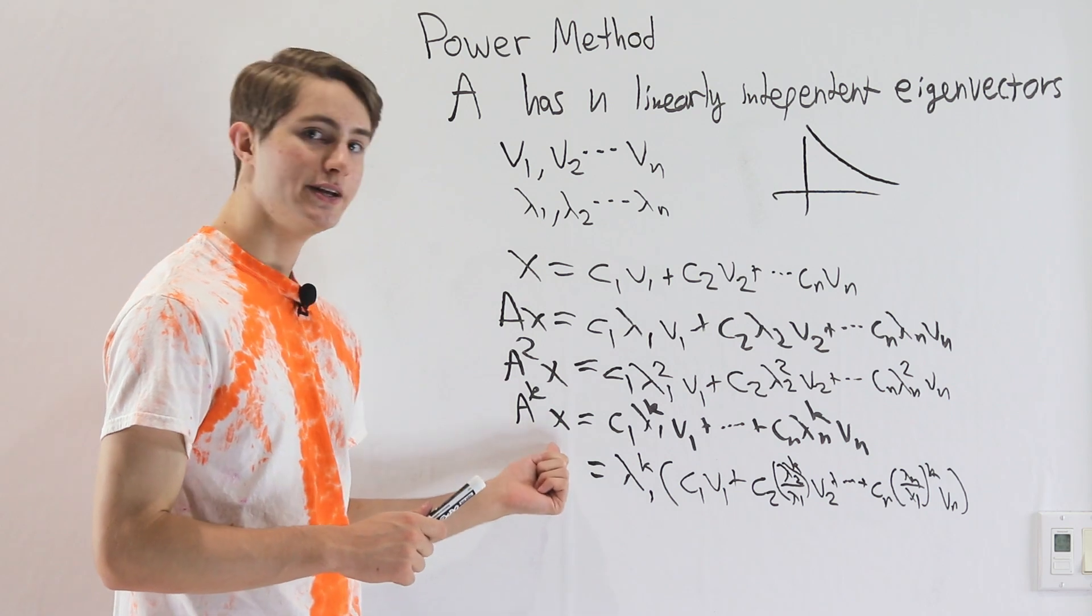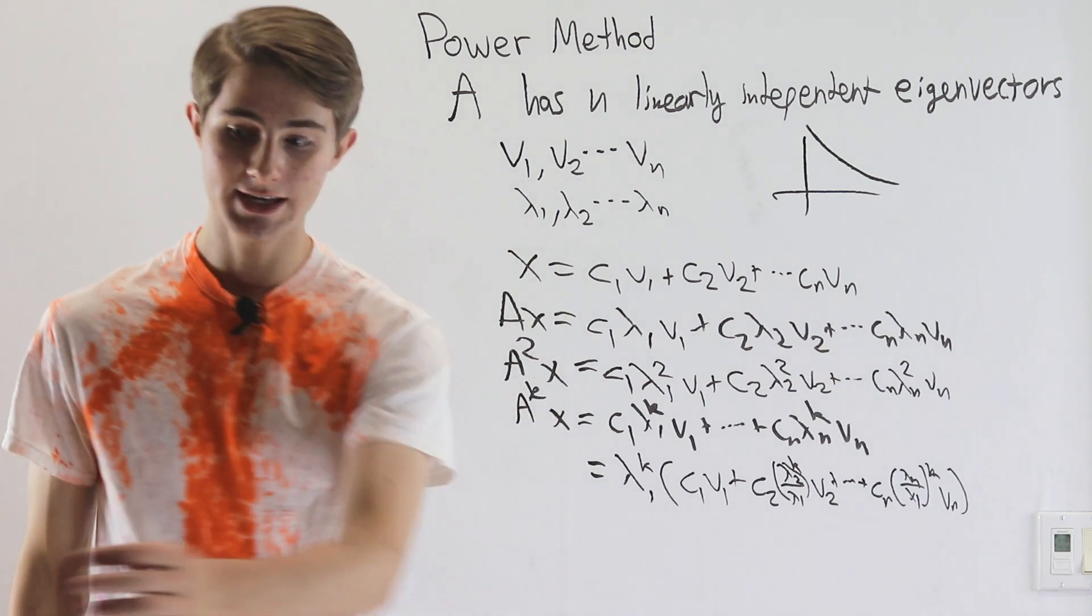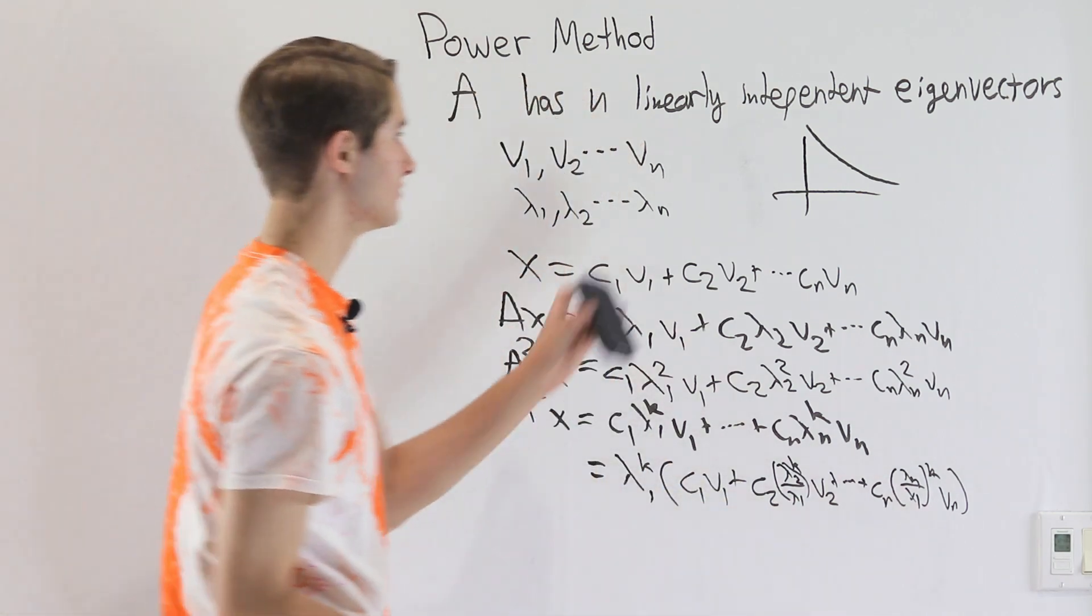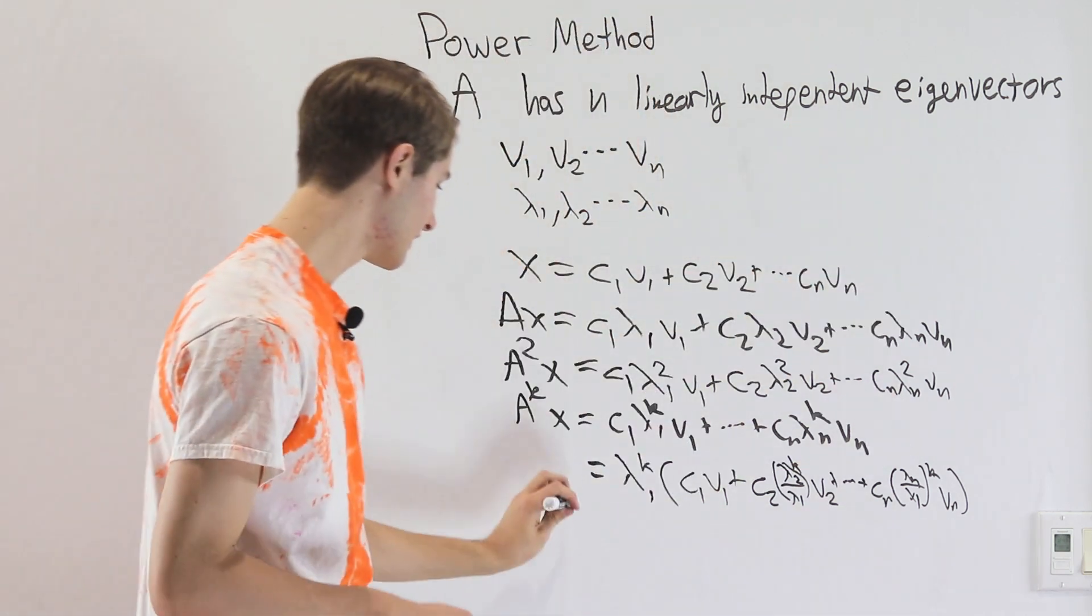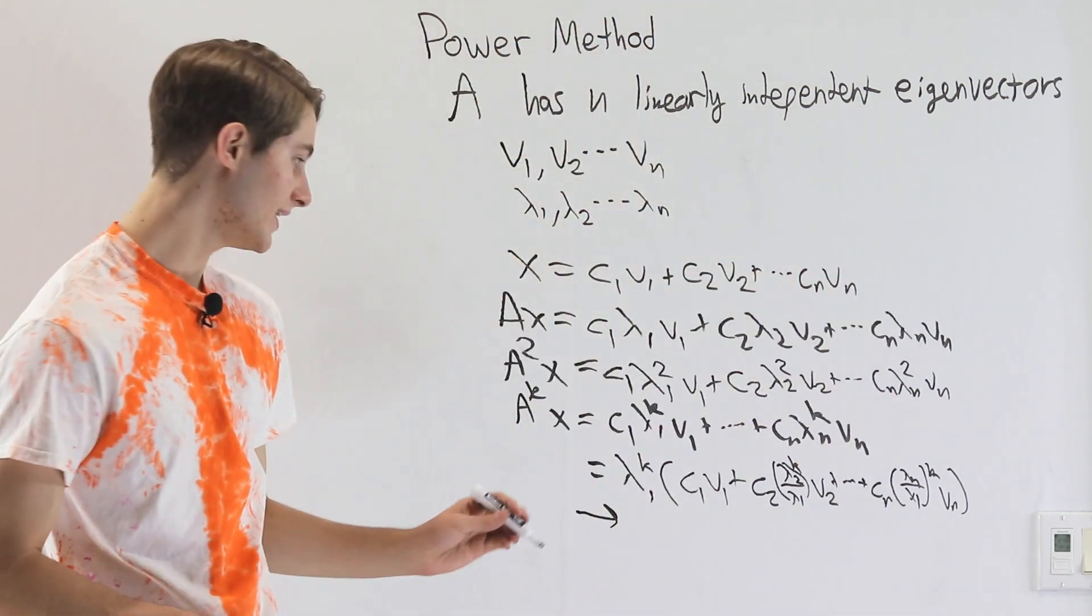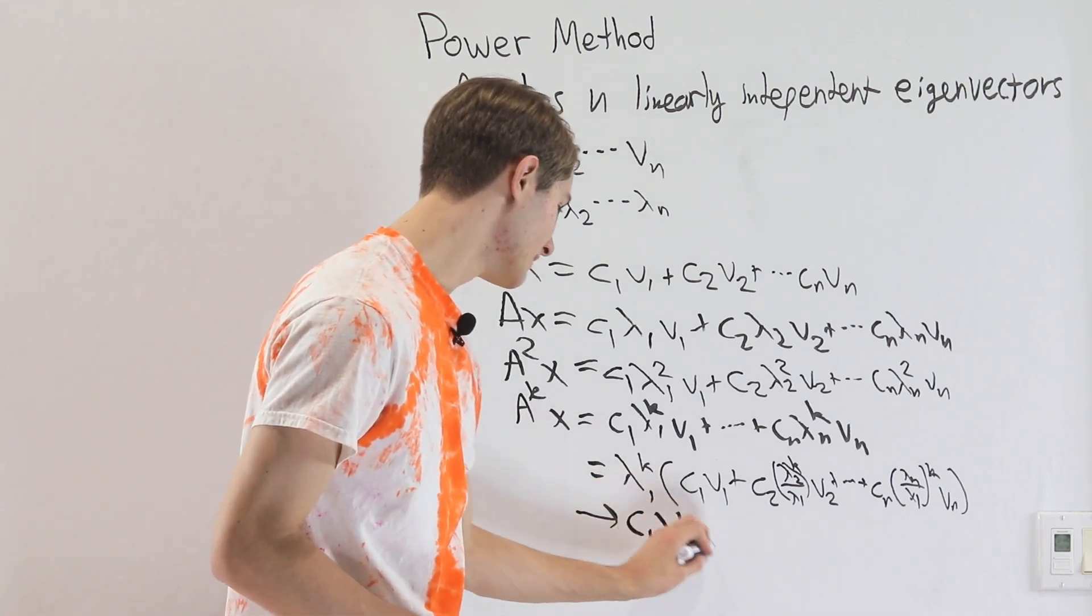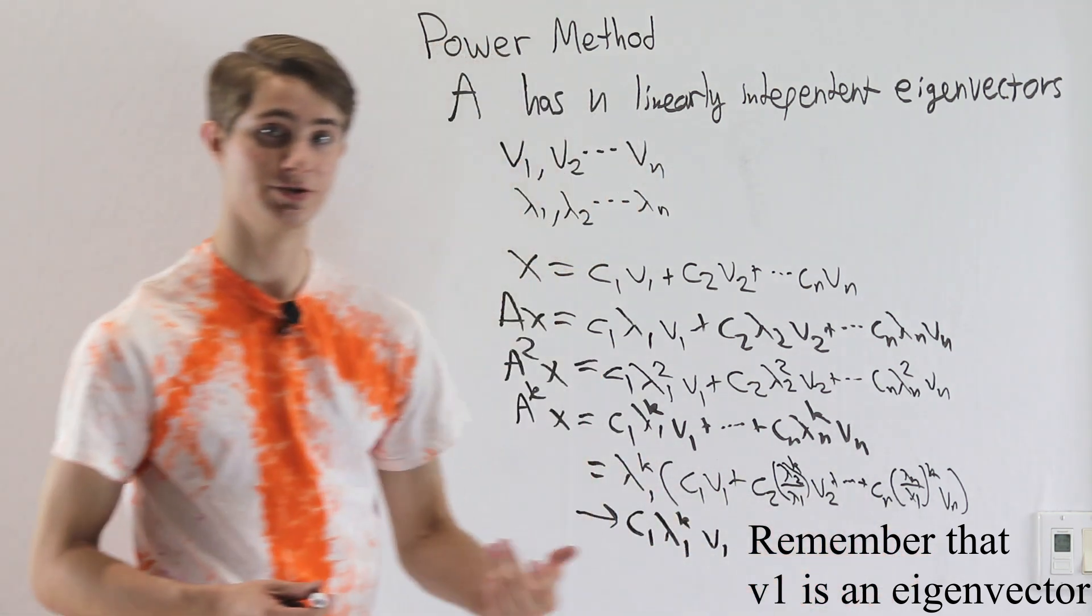So if we iterate enough times A to the k, A to the k plus 1, A to the k plus 2, and we keep going and going, all of these parts are going to disappear as they go towards 0. And all we're going to get left with as we increase the value of k is c1 lambda 1 to the k v1, just this first part, because everything else starts approaching 0.